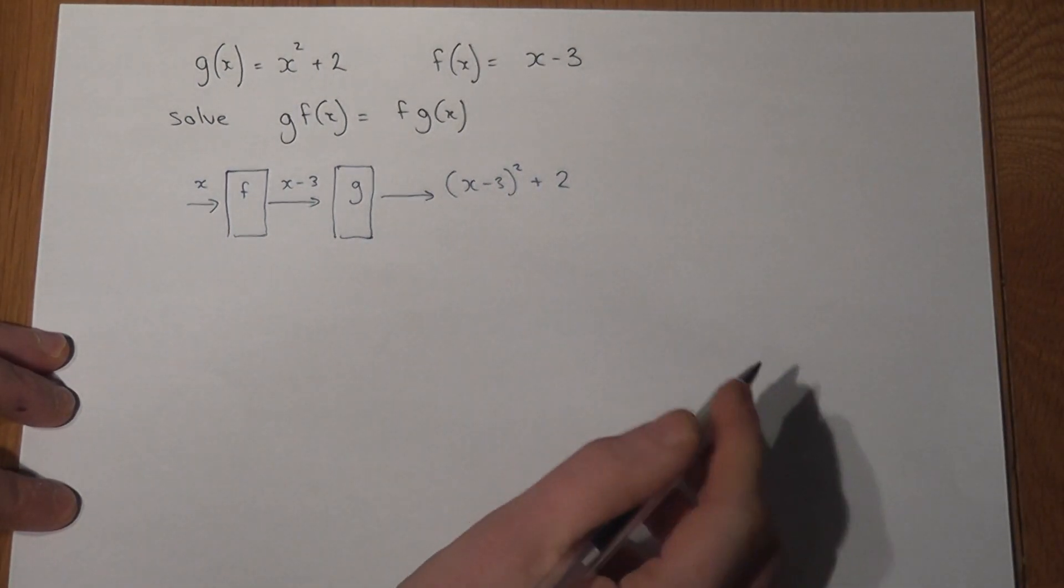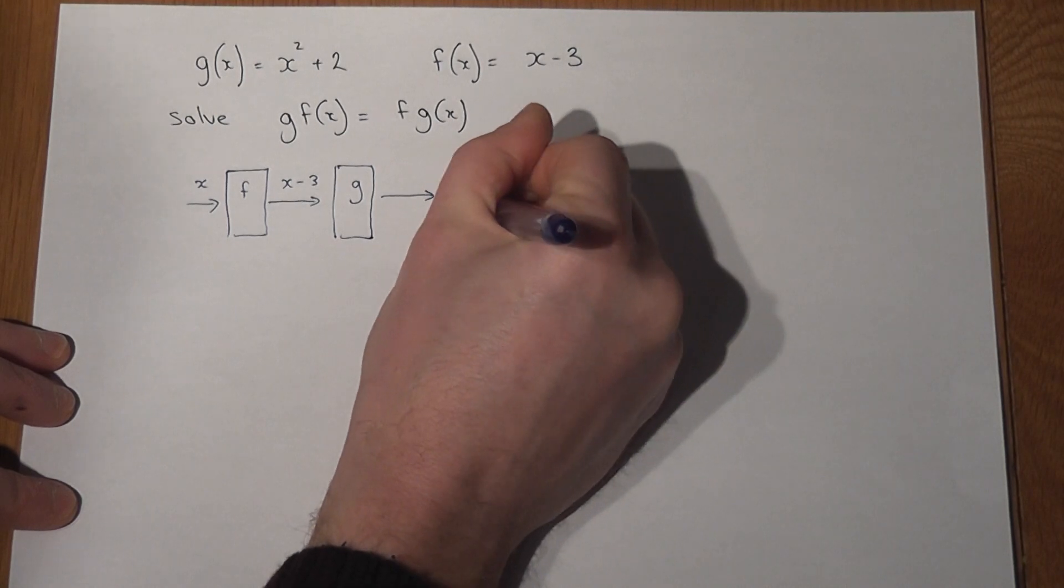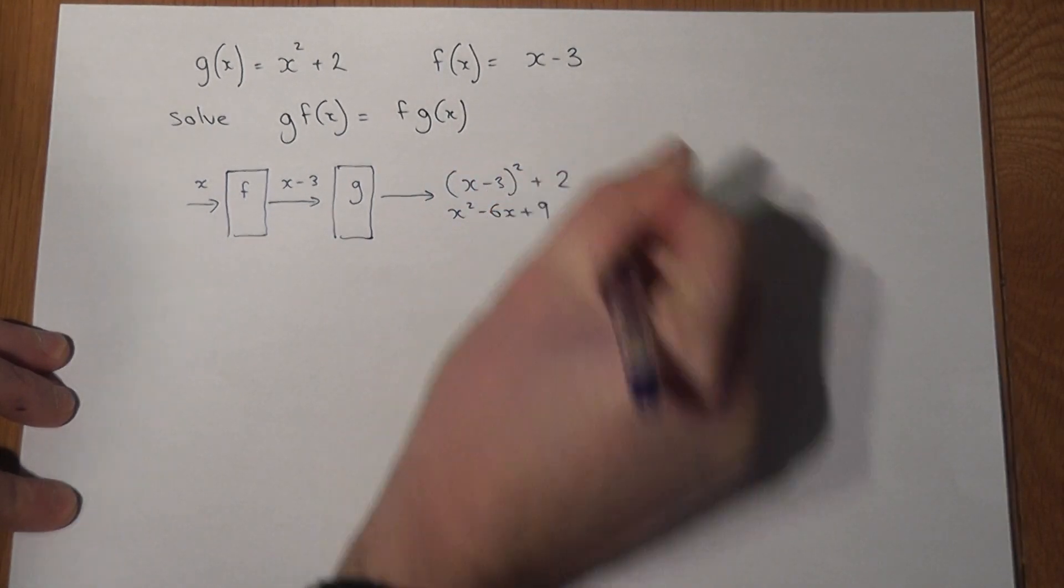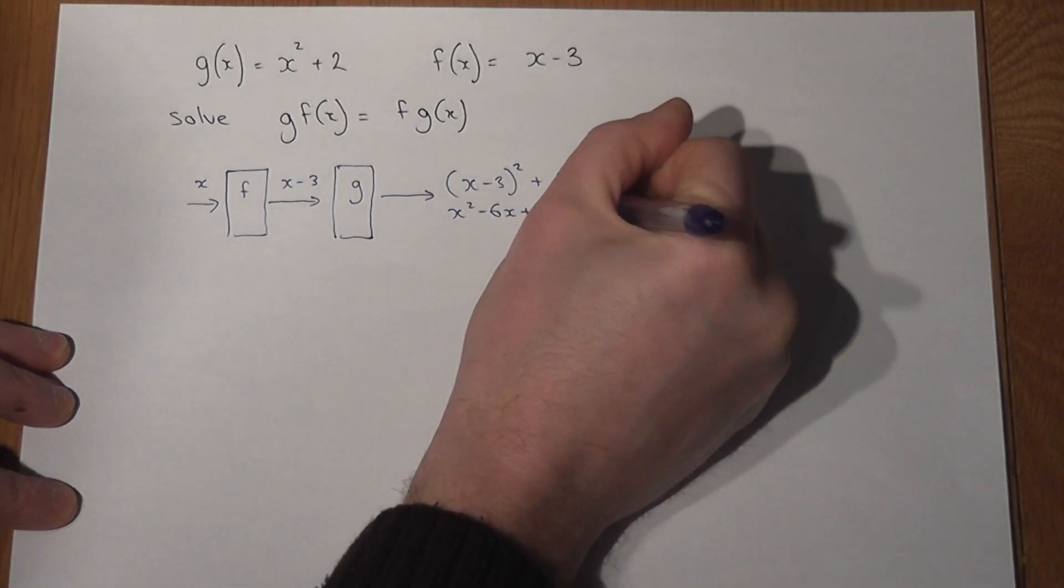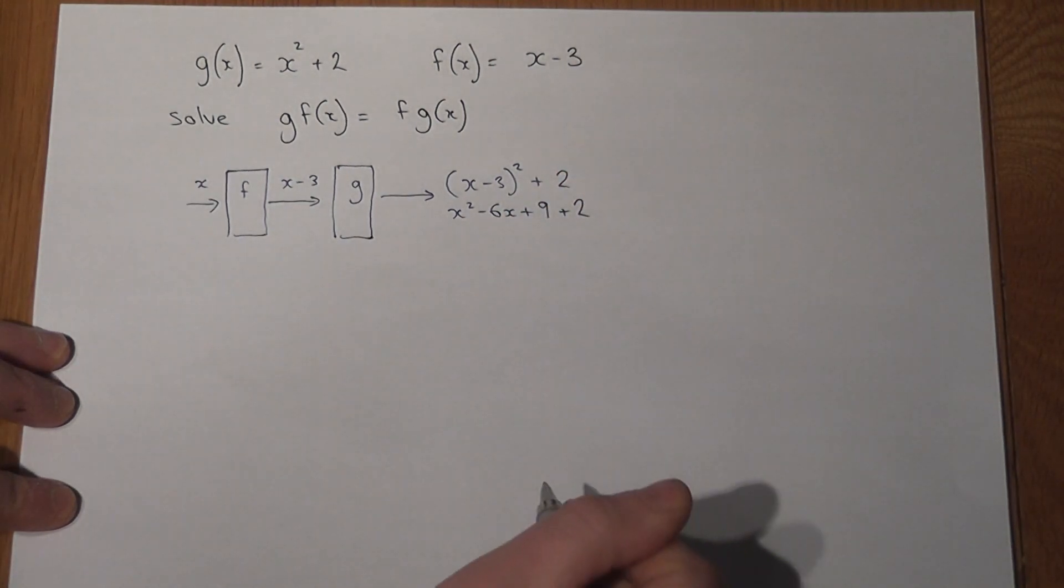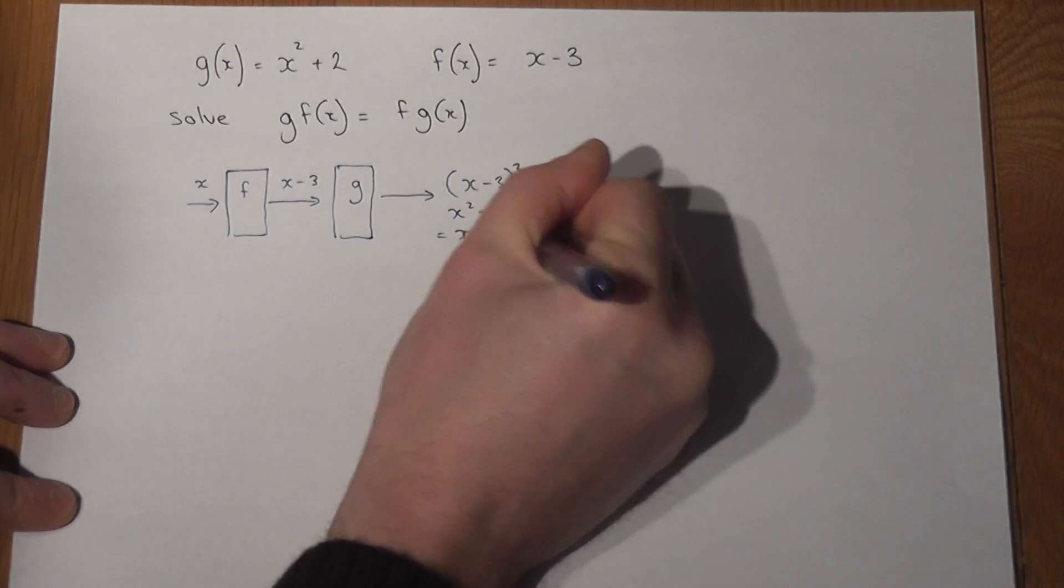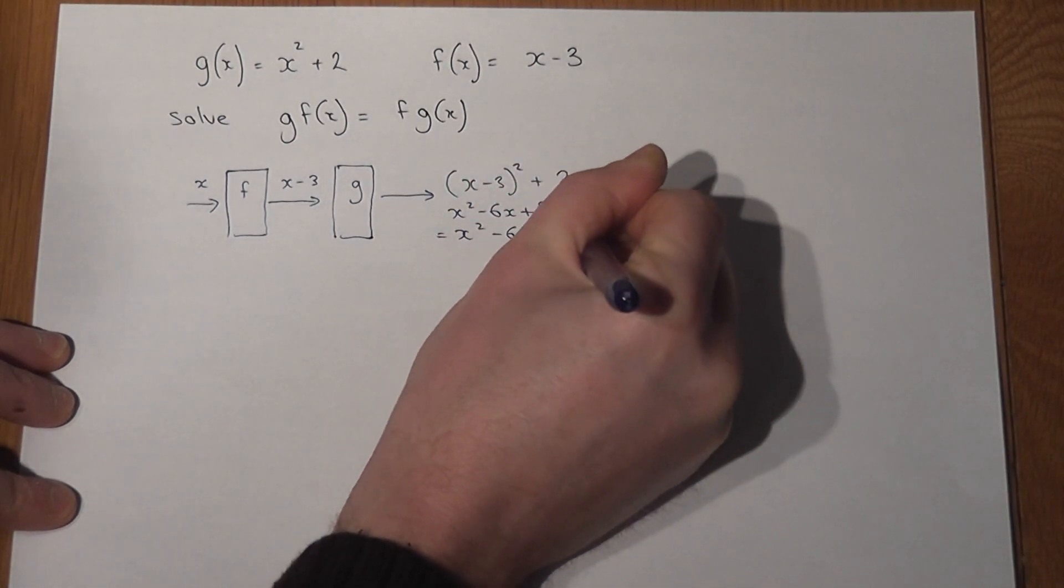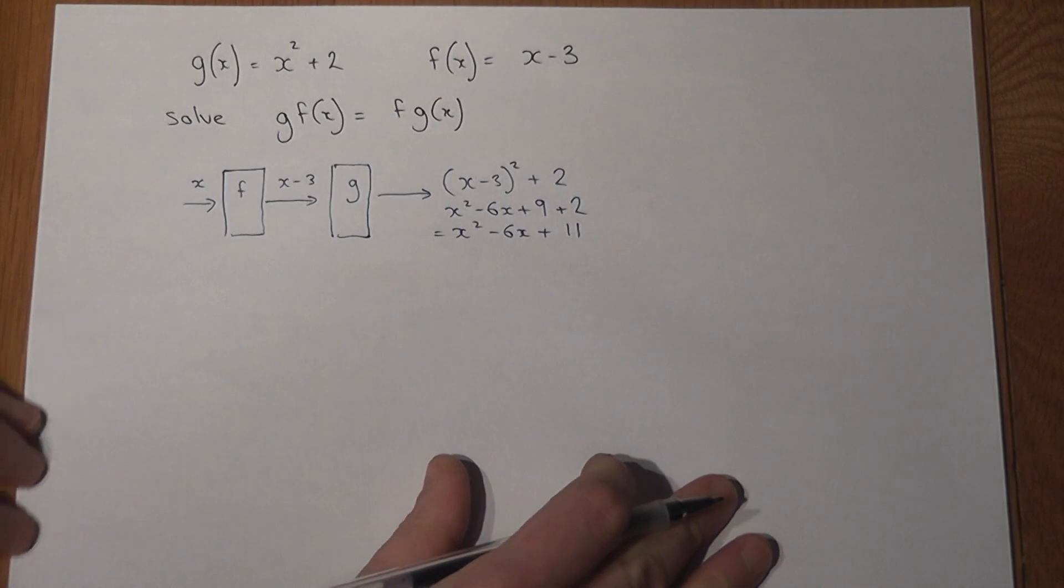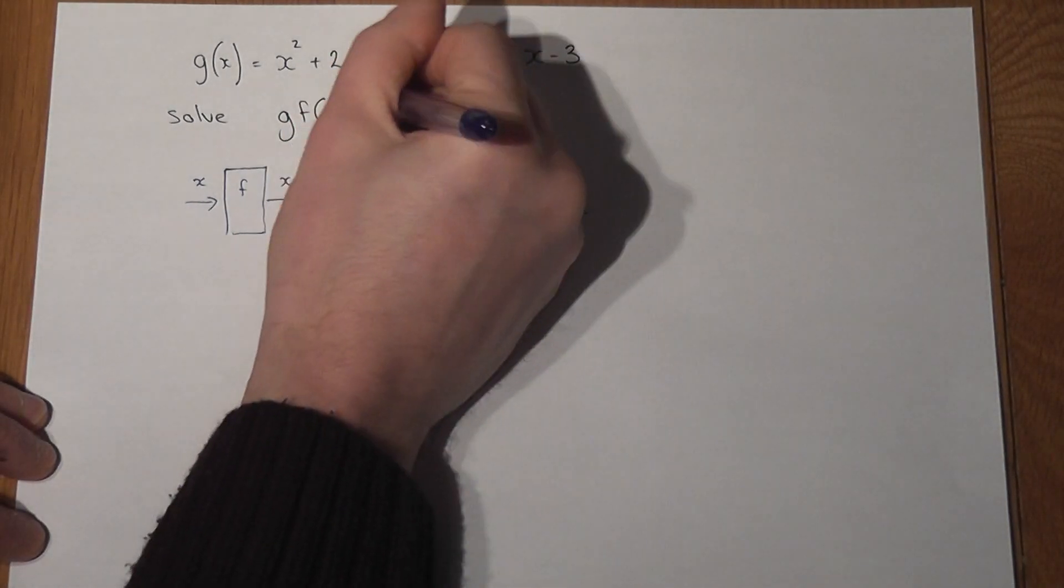And this can be expanded to give x squared take away 6x plus 9 plus 2, which can be simplified to give x squared take away 6x plus 11. So that is the left hand side.